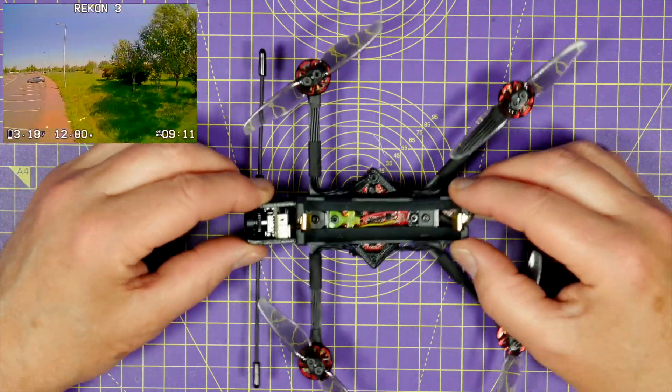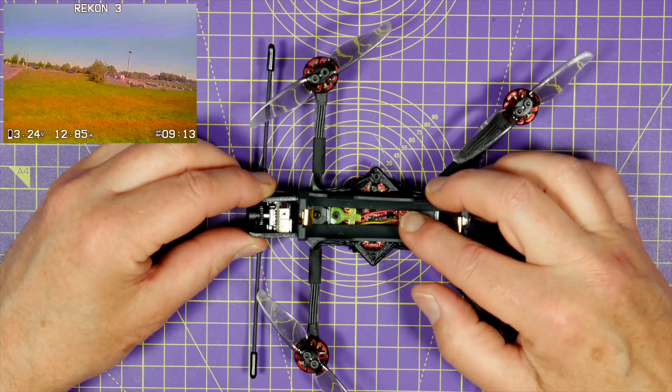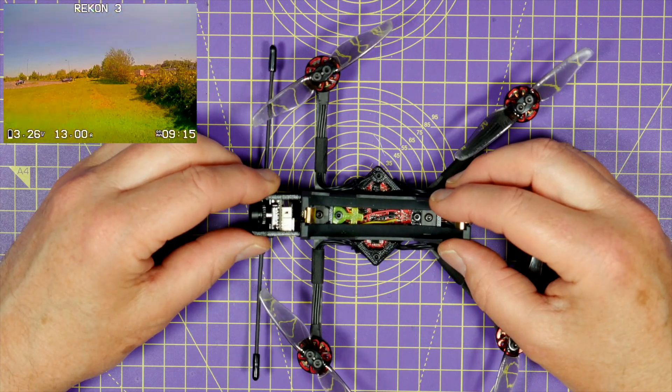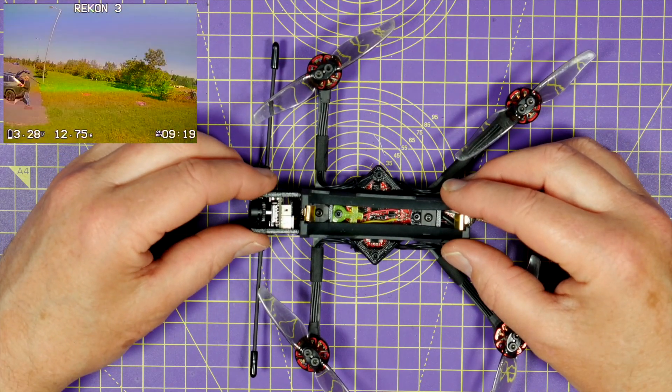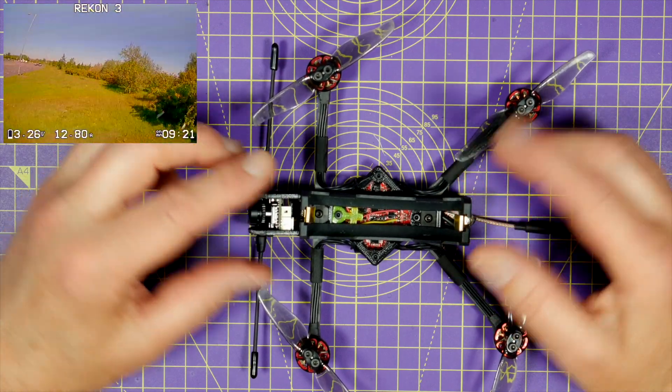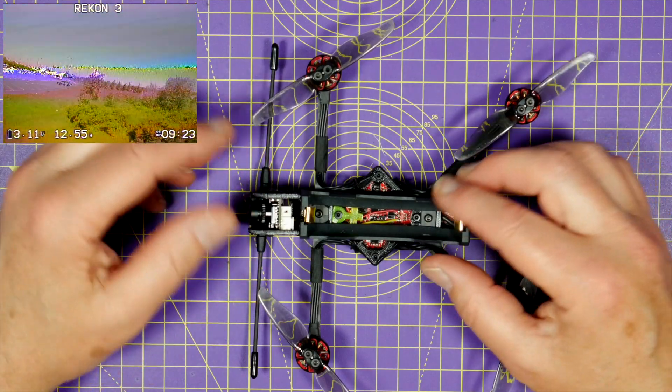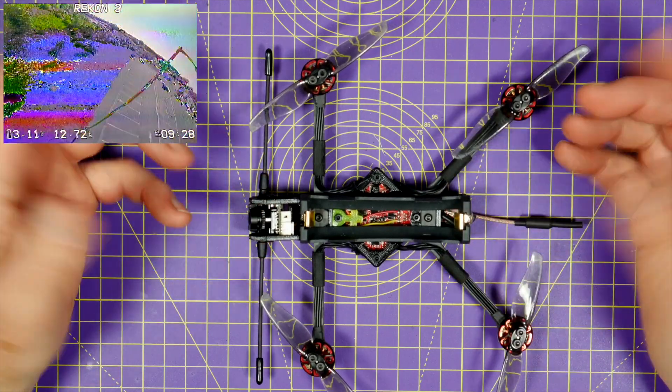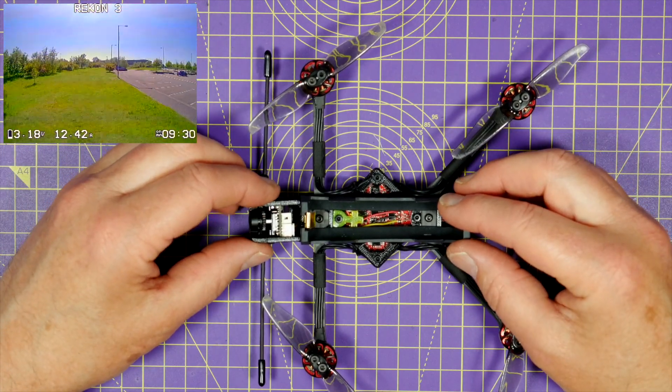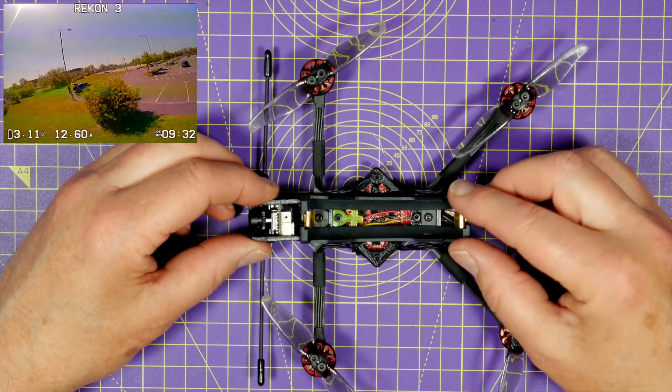It flies pretty nicely straight out of the box. Mine came flashed with Betaflight 4.2. And Rackon have set the warning and minimum cell voltage to 3V. That's about right. But you can let lithium-ion cells get down to about 2.8V, or even 2.5V in theory. Although I wouldn't recommend it.